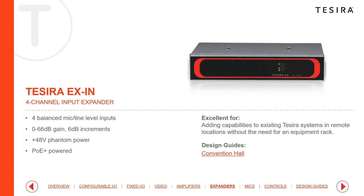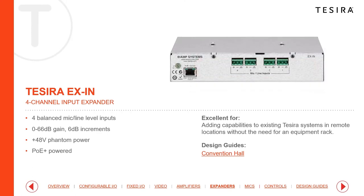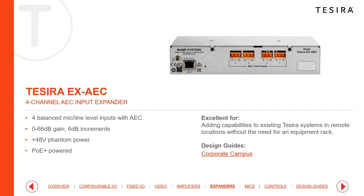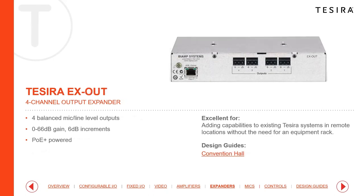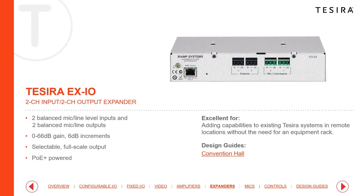The modular remote expanders are PoE Plus powered and sit on the AVB network. The Ex Inputs offers four inputs, Ex AEC offers four channels of echo cancellation, Ex Outs provides four analog outputs, and there's also the Ex IO with two inputs and two outputs.